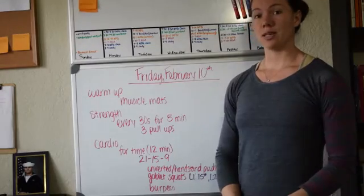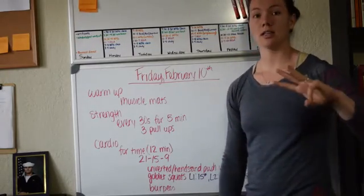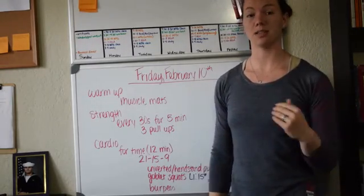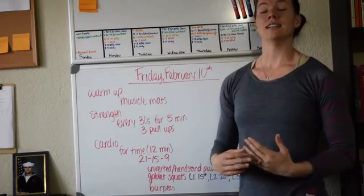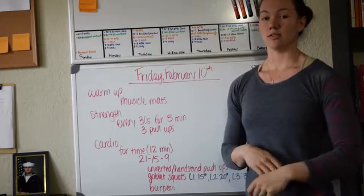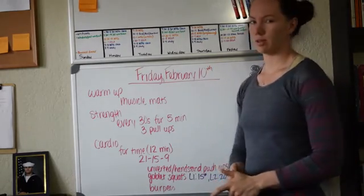Every 30 seconds for five minutes, three pull-ups. It's a low number of reps, but you're going to be doing these often. I want you guys to start with your hardest version of a pull-up and then if you need to, you can go down from there. So if you have three strict pull-ups, start with three strict pull-ups.